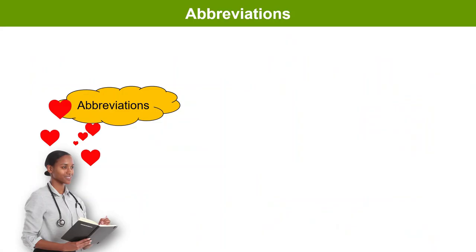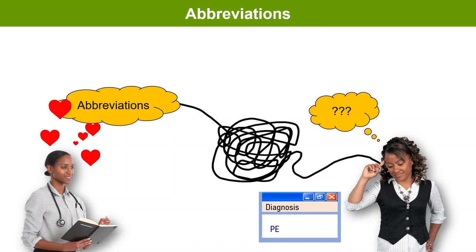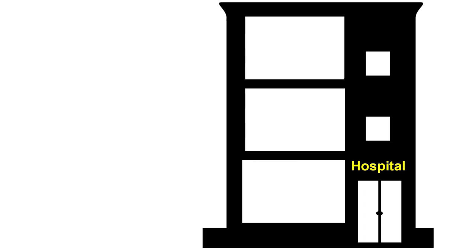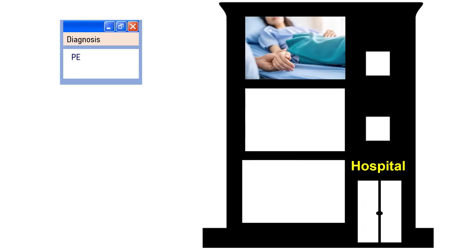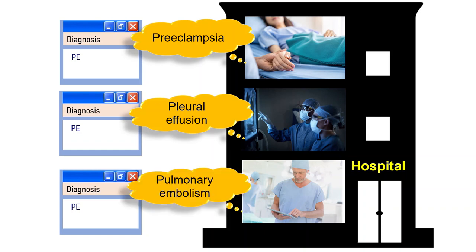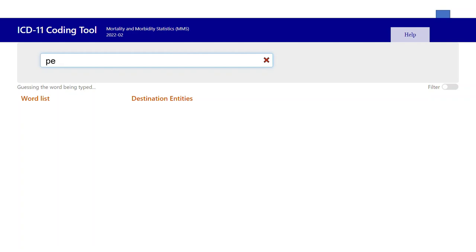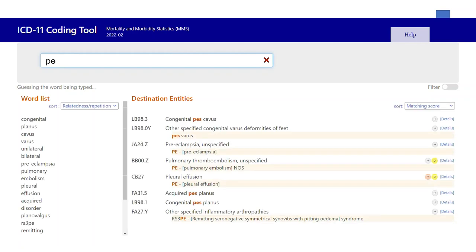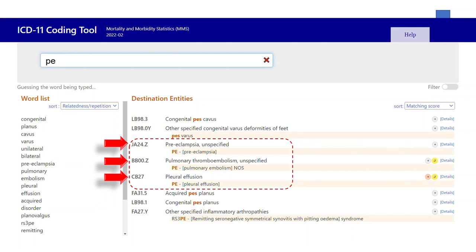Doctors love abbreviations — they make our life easier, but they were a big no in documenting final diagnoses because different specialties use the same abbreviations to refer to different conditions, confusing coders. The coding tool can help us resolve this problem. For example, in one hospital, one doctor may document PE to mean preeclampsia, another may use PE to mean pleural effusion, and a third may use it to mean pulmonary embolism. Every one of them would type the same thing into the coding tool, yet every one of them would still be able to record the correct diagnosis into the electronic medical record database by simply clicking the correct entity.